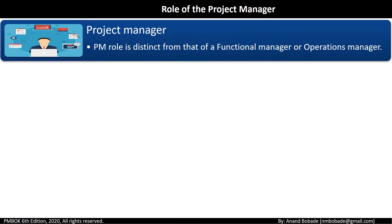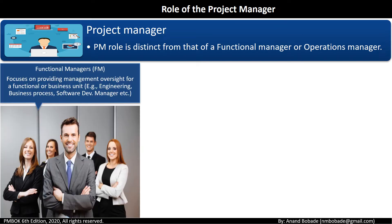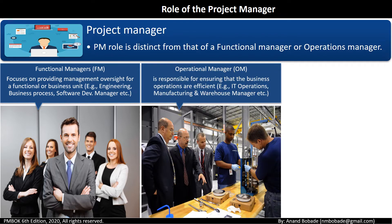On your project you may come across other similar roles like functional manager or operations manager. But remember, the project manager's role is distinct from that of functional or operational managers. A functional manager focuses on providing management oversight for a functional or business unit — for example, engineering, business process, or software development. An operational manager is responsible for ensuring that business operations are efficient — for example, IT operations, manufacturing, or warehouse management. The project manager will always engage with these functional managers based upon the type of organizational structure you are working in.